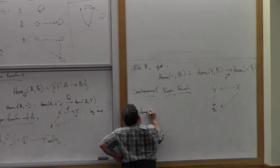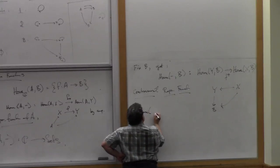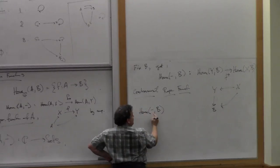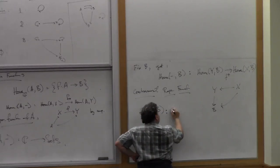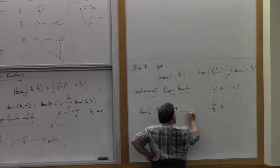So that's HOM(-,B). It's contravariant in the first argument, and so that's going from C^op into set.